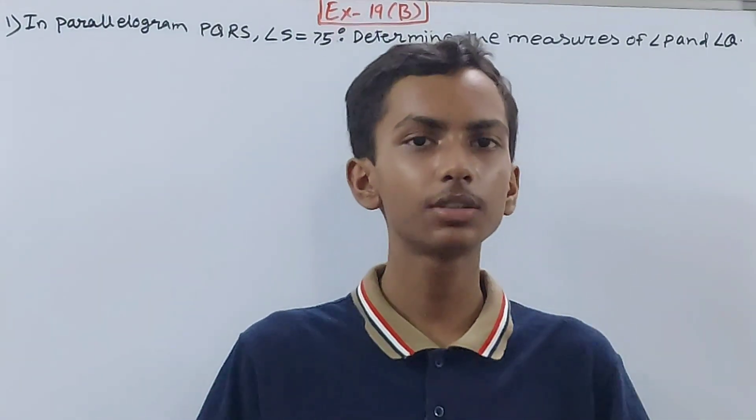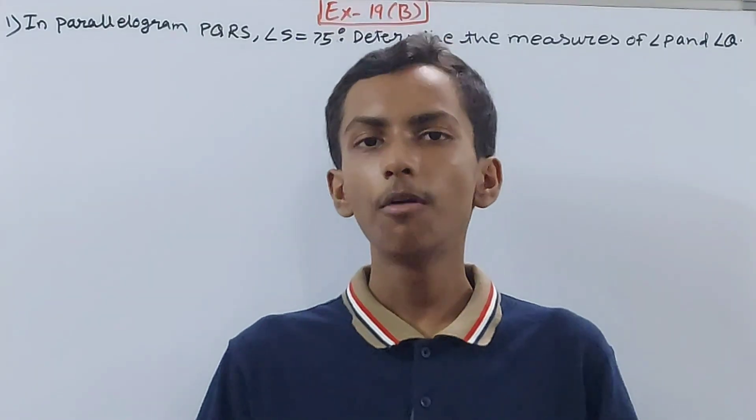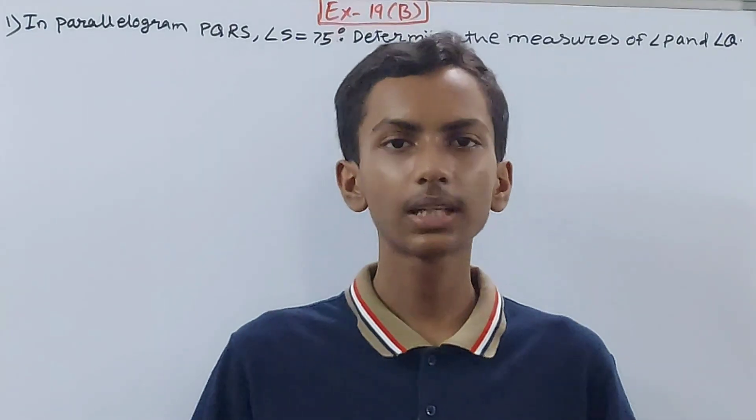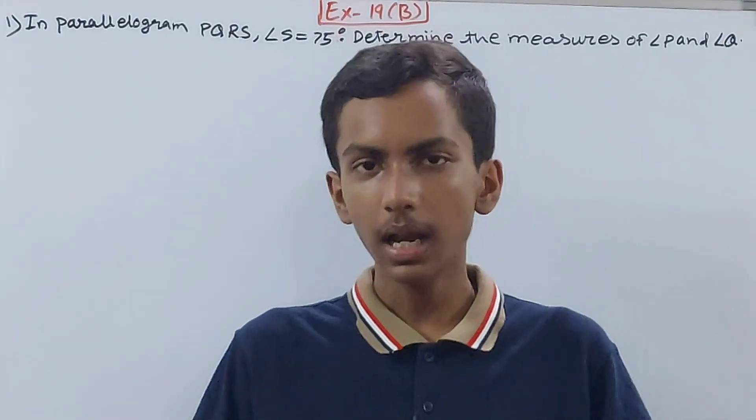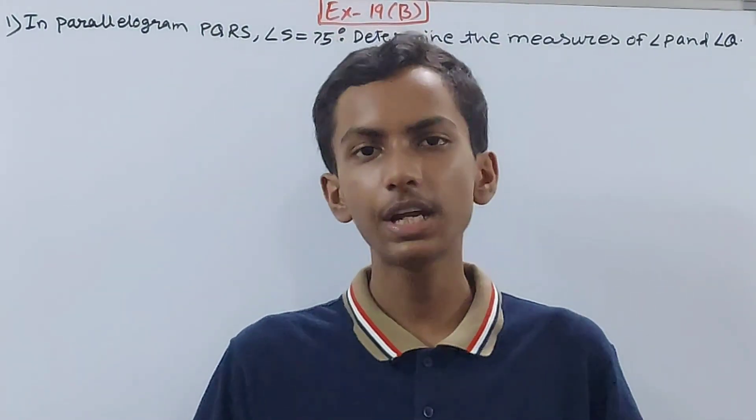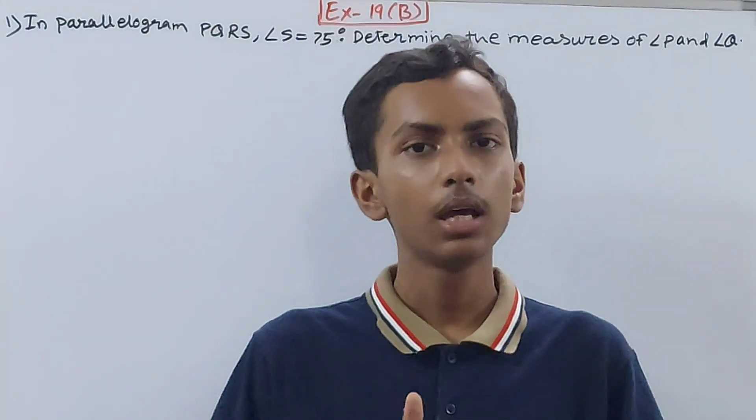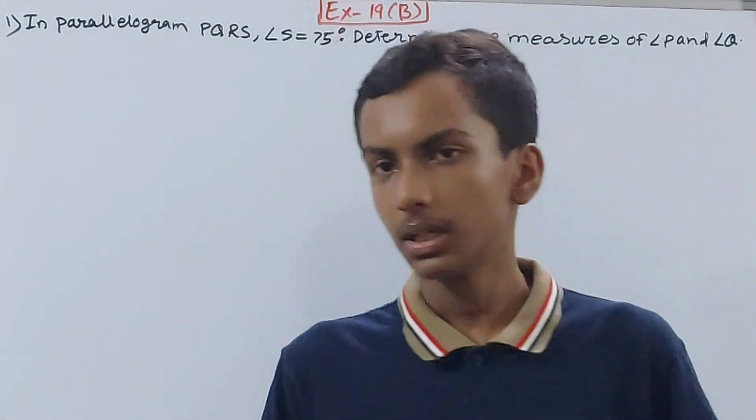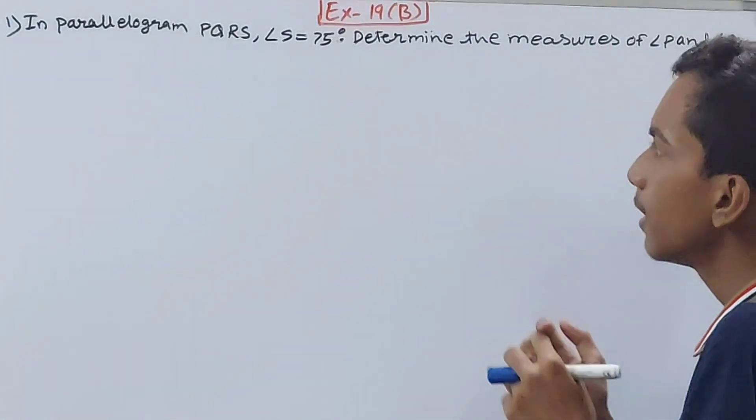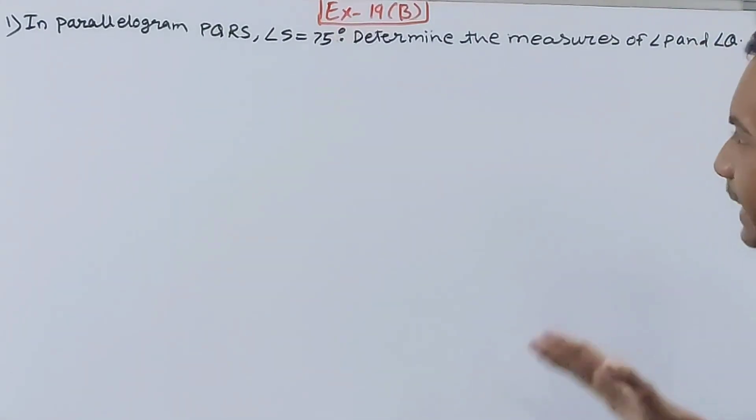Hello friends, welcome back to my YouTube channel, Unlock Your Learning. In this video we're going to solve IEC Mathematics Class 8, Chapter 19, Special Types of Quadrilaterals, Exercise 19D, Question Number 1. It says in a parallelogram PQRS, angle S is equal to 75 degrees, and we have to determine the measures of angle P and angle Q.